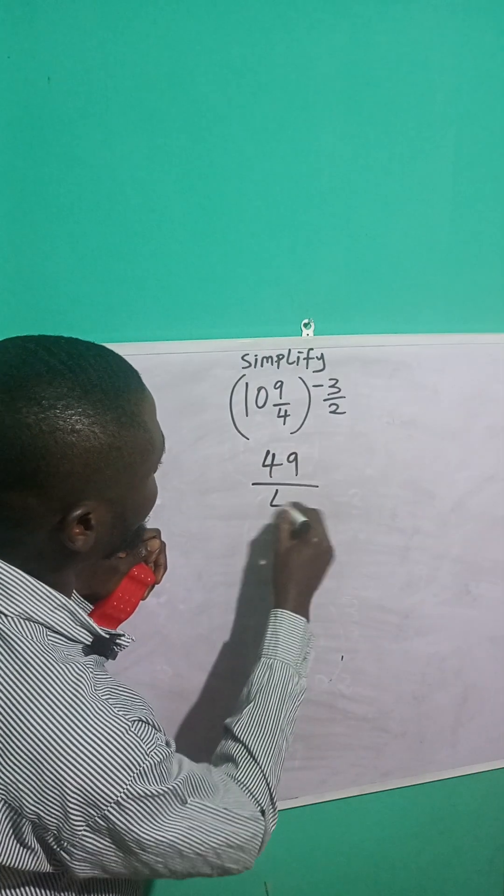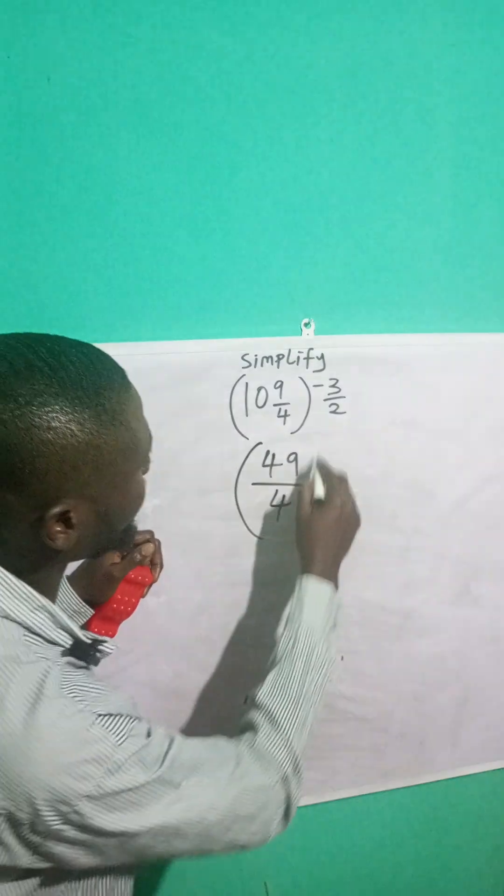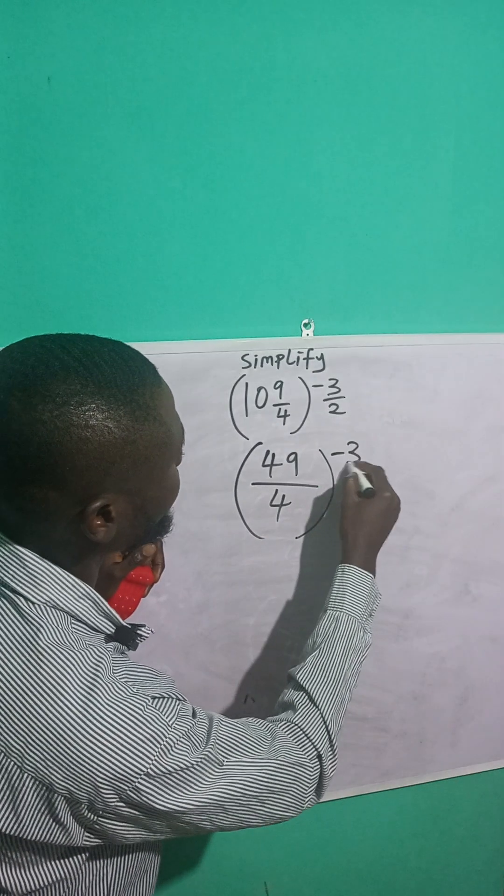49 over what? This 4 here, right? 4 times 10 is 40. 40 plus 9 is 49 over 4, which is the denominator. Raise the power of what? Minus 3 over 2.